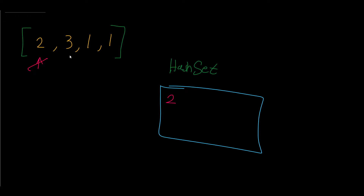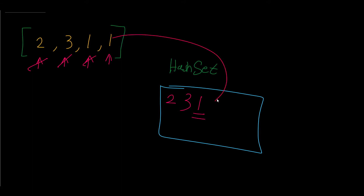Does the hash set contain 3? No, so we add 3 and advance the pointer. Does the hash set contain 1? No, so we add 1. Advance the pointer — does our hash set contain 1? Yes, it's right here, so we have duplicates and we return true. If you ask what happens when you try to add a duplicate to the hash set — for instance adding another 1 — the hash set will simply override it, so in the end we will only have one 1 and no duplicates.